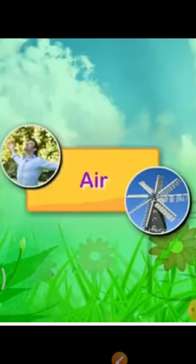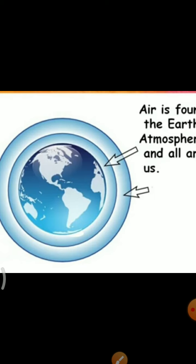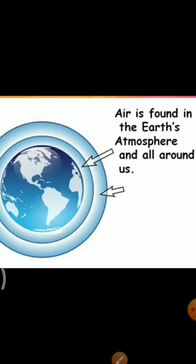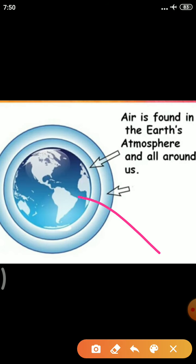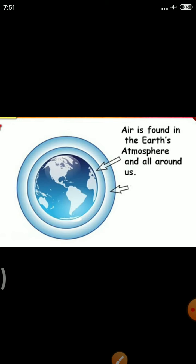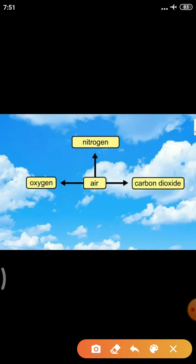Air can be found everywhere. Air is found in the Earth's atmosphere and all around us. We can see our Earth and find air in its atmosphere, but we cannot see air. Air has different gases — it is a combination of different gases. It contains carbon dioxide, nitrogen, and oxygen.